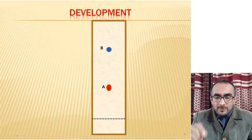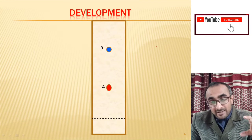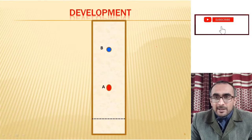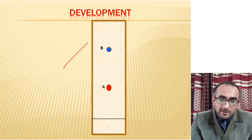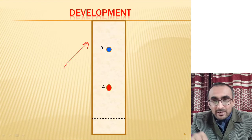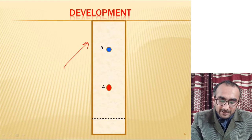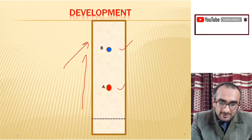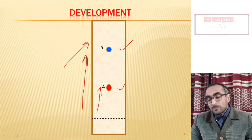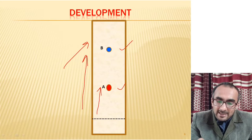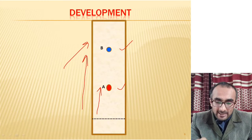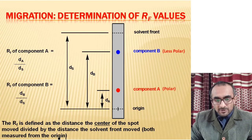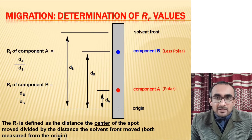After drying, the spots are developed for visualization. If the analytes are colored, they can be seen with the naked eye. If not, a chemical must be sprayed on the silica gel plate to visualize them. For example, if two spots A and B are obtained, spot B has traveled faster than spot A from the bottom, meaning B has a similar nature to the mobile phase, while A has more similarity with the stationary phase, silica gel. This migration is measured as the retardation factor, called the RF value.